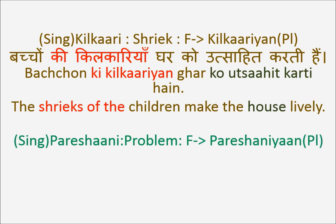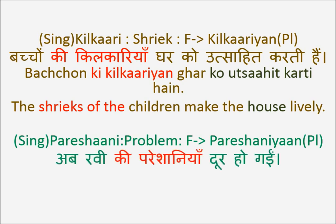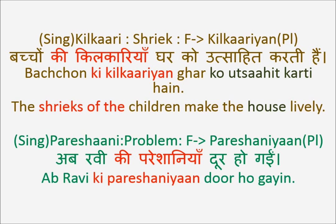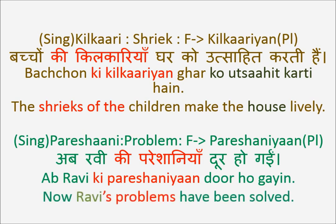Another example on similar lines for feminine gender turning from singular to plural: Ab Ravi Ki Pareshaniya Door Ho Gai. Ravi is a boy or man. Pareshani means problem; Pareshaniya is the plural form. Ravi's problems have been solved, have vanished. Ab Ravi Ki Pareshaniya Door Ho Gai. In feminine gender, Ki remains Ki — Bacchon Ki Kilkariya, Ravi Ki Pareshaniya, Aap Ki Pareshaniya Door Ho Gai.